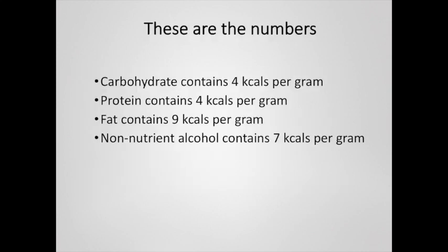Once again: carbohydrates have four kilocalories per gram, protein has four kilocalories per gram, fat has nine kilocalories per gram, and alcohol has seven kilocalories per gram. These are important numbers to remember — they're going to appear again and again in this course as we discuss the various content of foods and specific ways to calculate what is in a dish that you prepare at home.